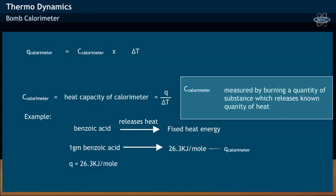On substituting the Q value in the equation, we get C_calorimeter equivalent to 27 kilojoules per mole.